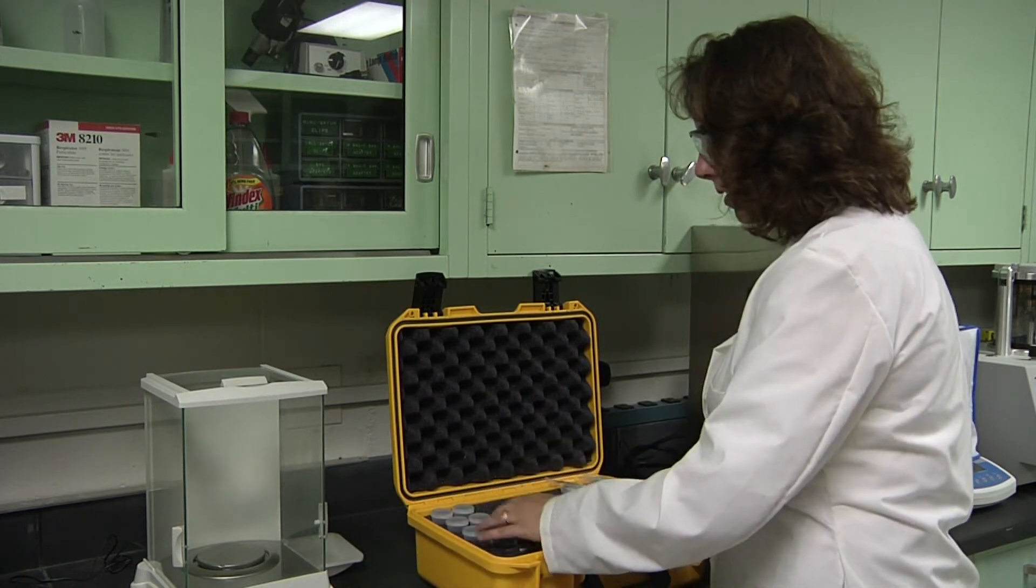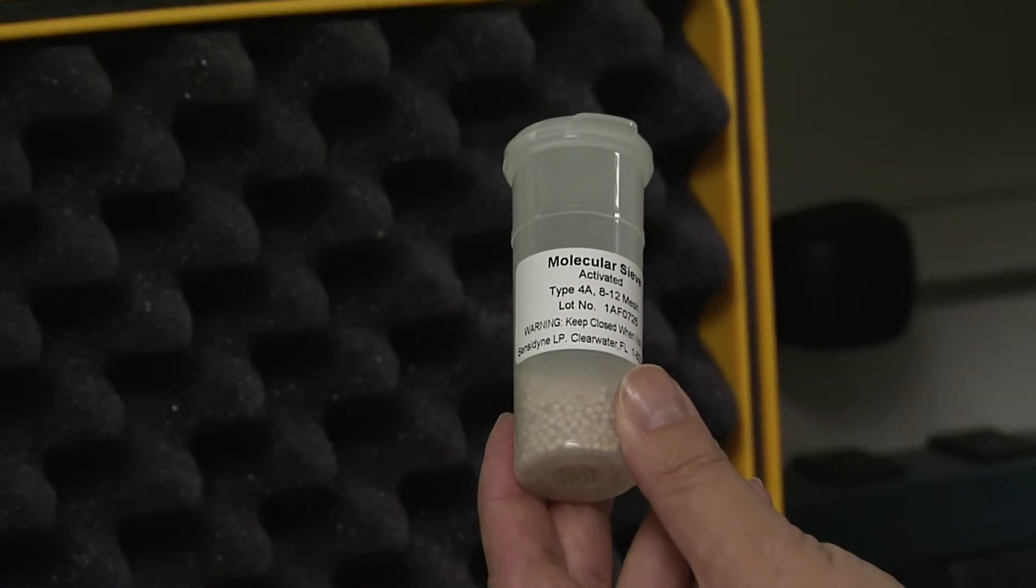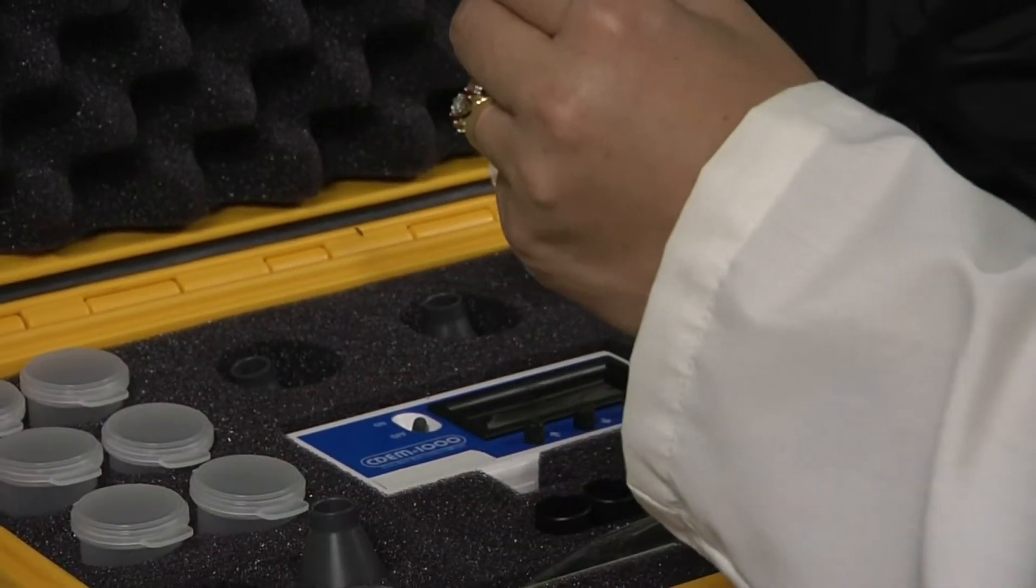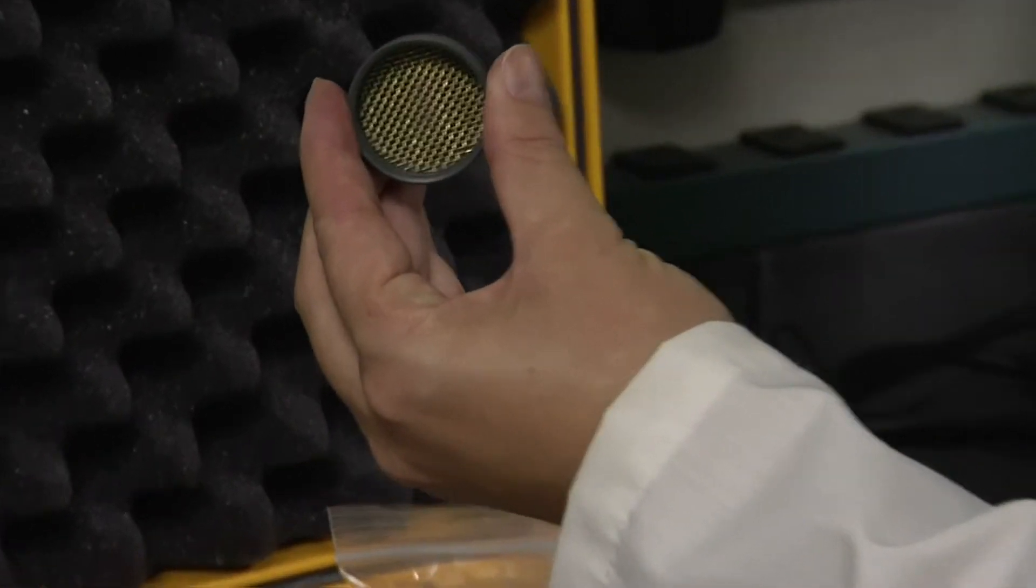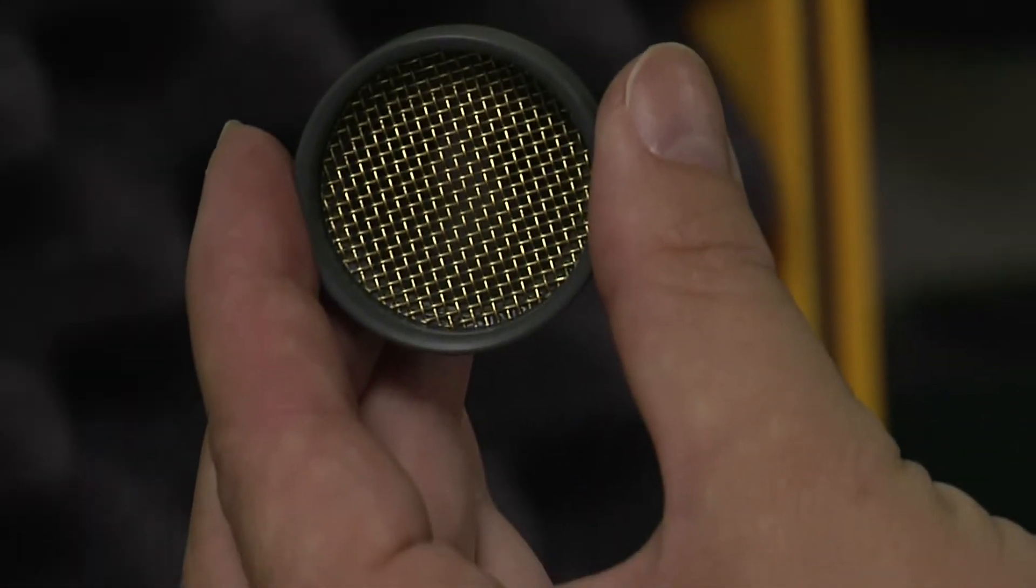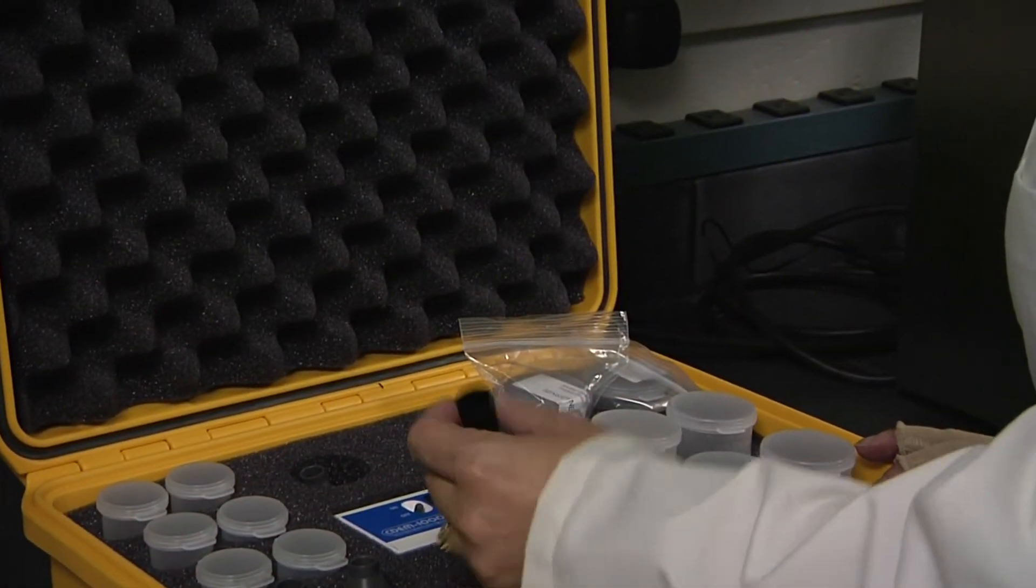You will have six sampling vials filled with activated sieves, two funnels with a 20 mesh screen. Those funnels are for sampling. You'll also have five sampling cups.